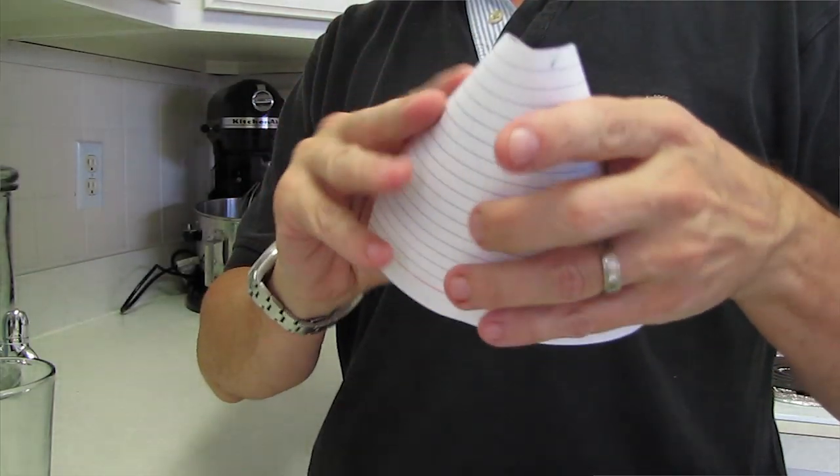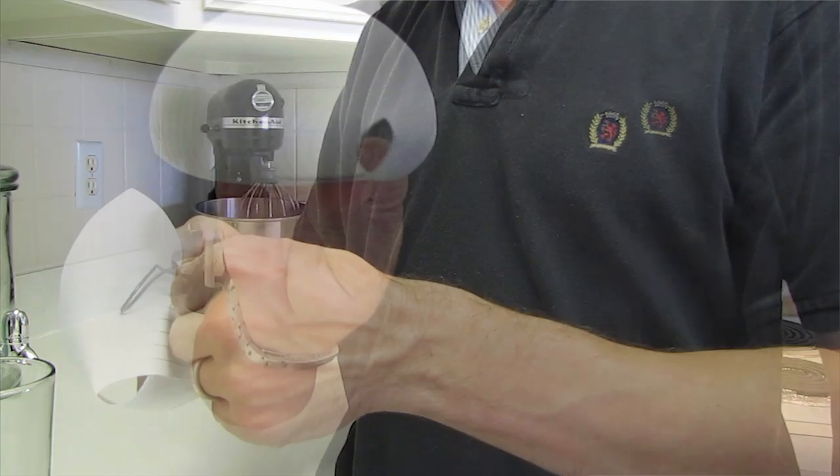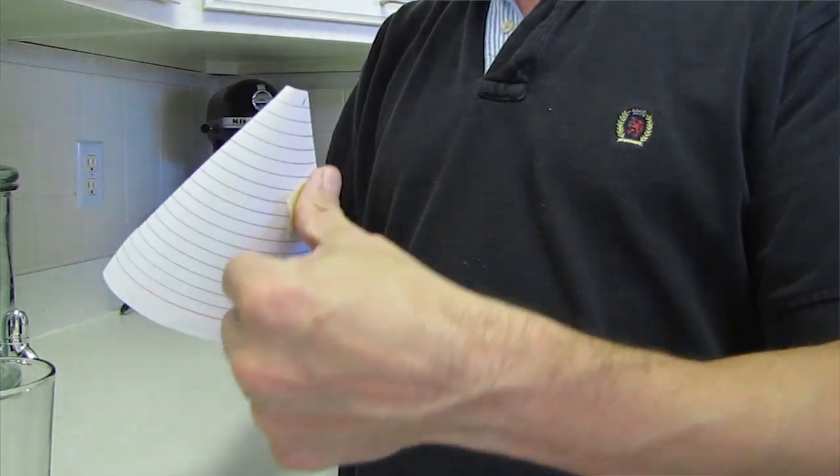What we're going to do, we're going to take this piece of card stock that I have here, it's just an index card, a 5x7 index card. I'm going to fold it into a funnel and tape it so it stays shaped in the funnel shape.